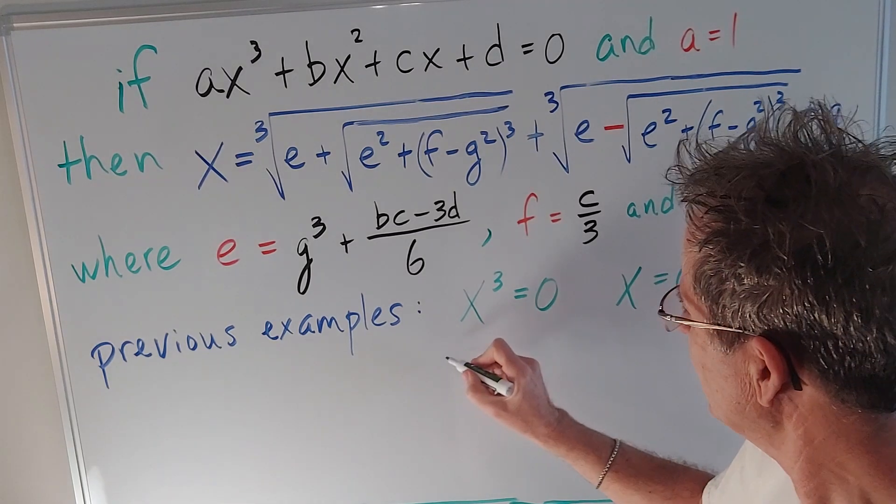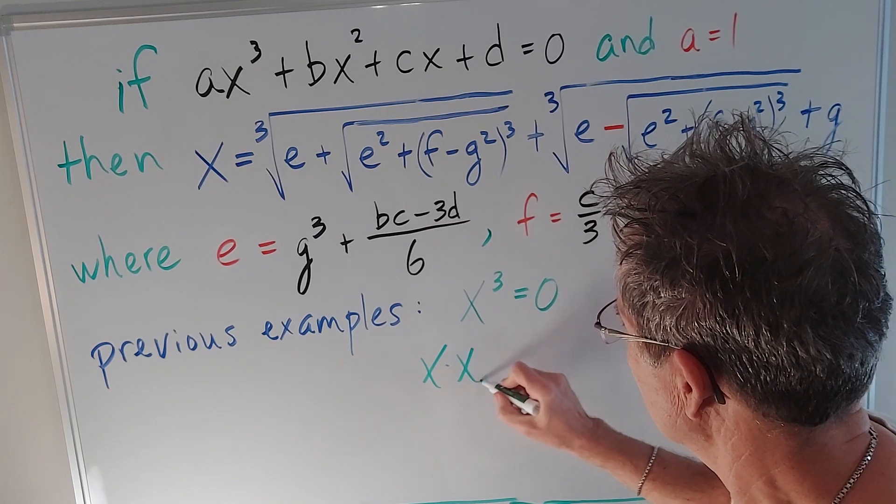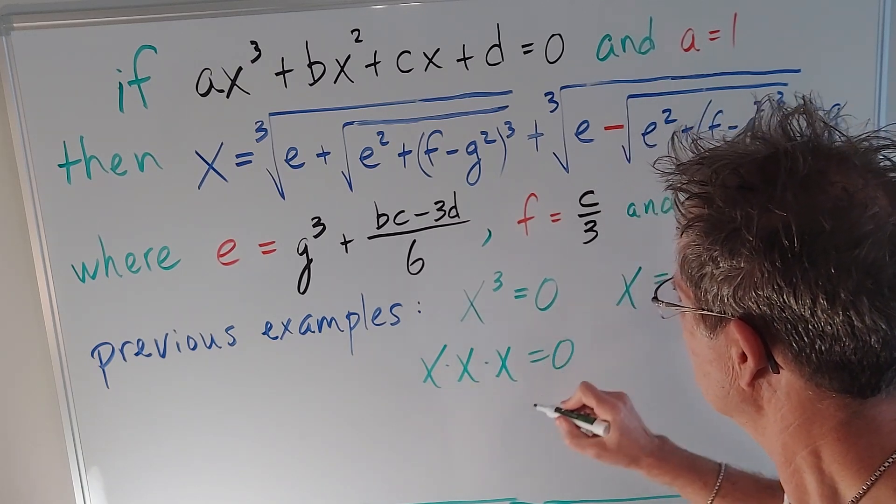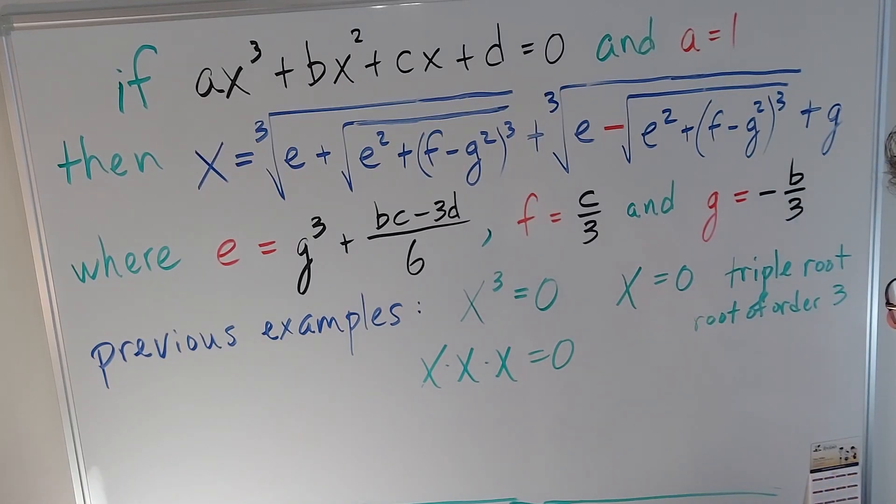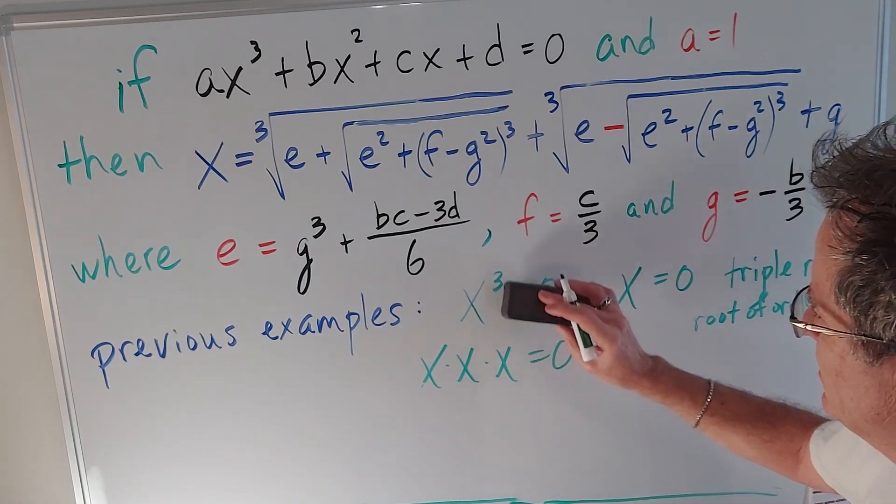Or you could say a root of order 3. And you can think of it this way: x³ is x times x times x. So there you have the three possibilities. But you can get zero for all three of them. So that's particularly simple.